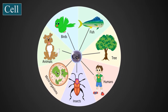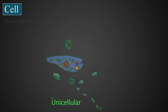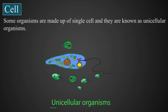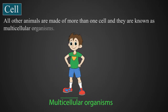All of these organisms are composed of at least one cell. For example, some organisms are made up of only one cell, and such organisms are called unicellular. And all other organisms that are made up of more than one cell are known as multicellular organisms.